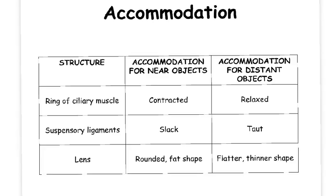When you are looking at a distant object, the ring of ciliary muscle relaxes and the suspensory ligaments become taut, giving the lens a flatter, thinner shape.